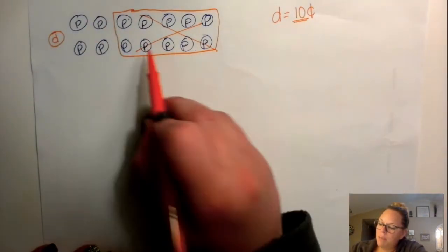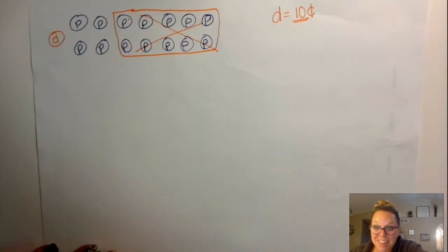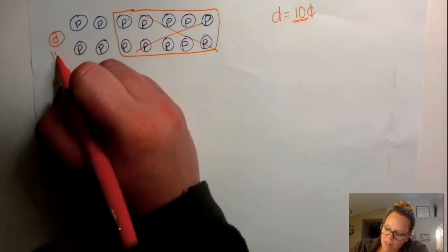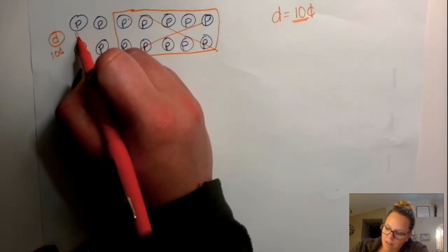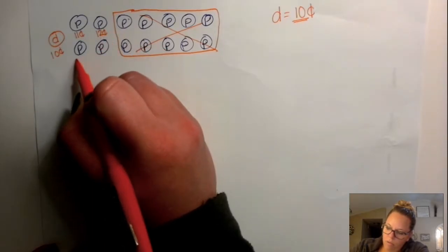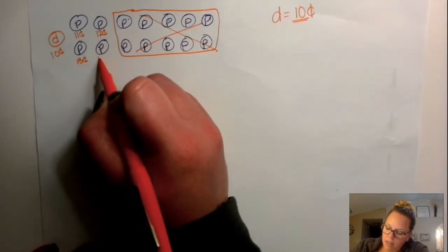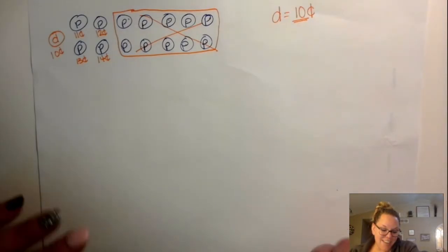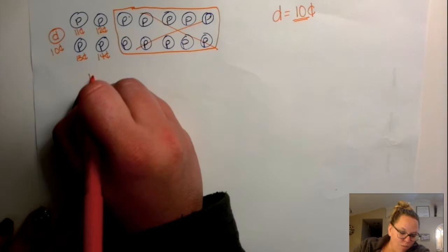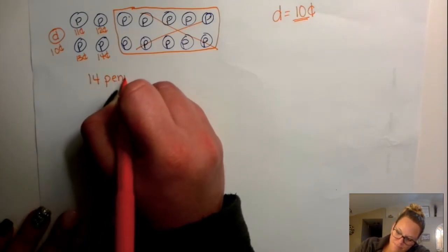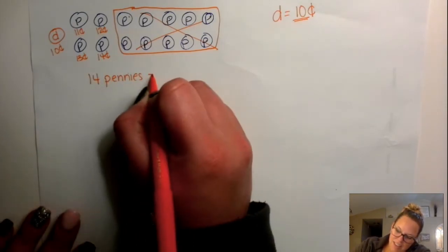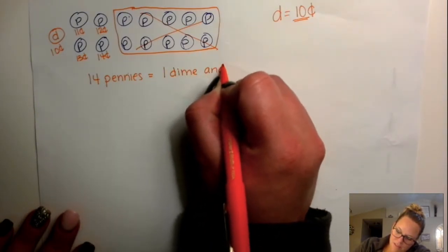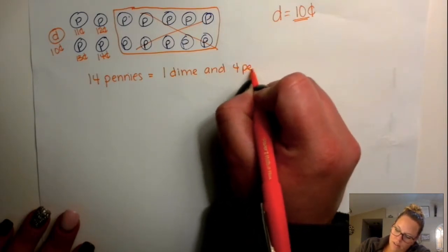One dime is the same thing as 10 pennies, which is 10 cents. How much money do I still have? 10, 11, 12, 13, 14. So I still have 14 cents. So 14 pennies is equal to 1 dime and 4 pennies — it's worth the same.